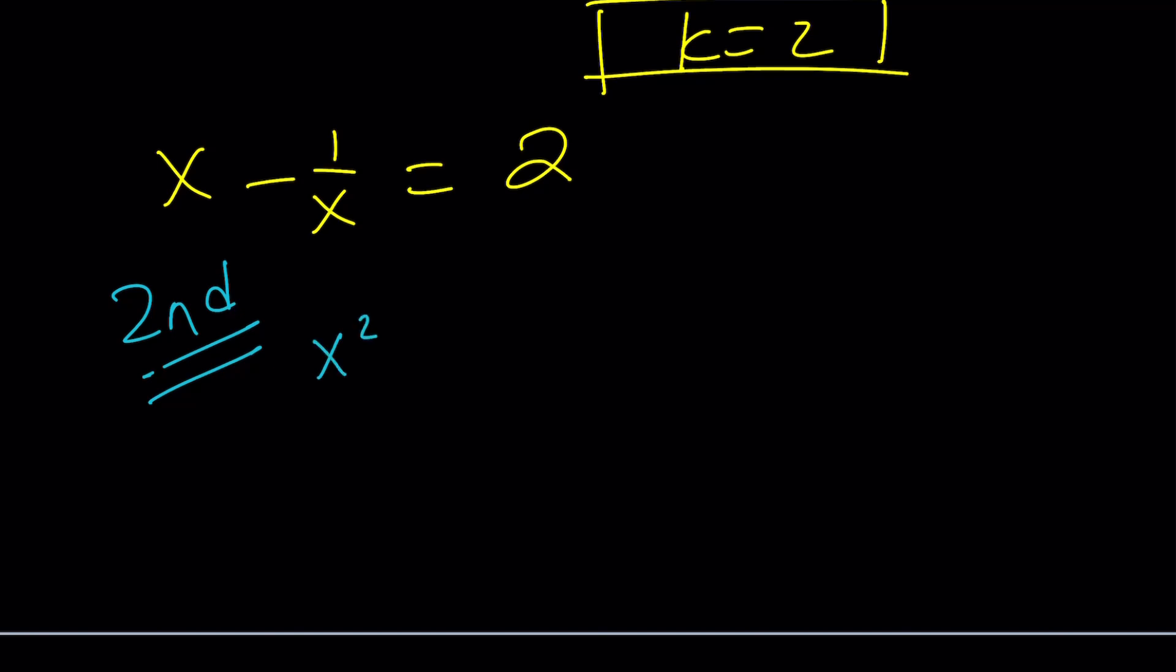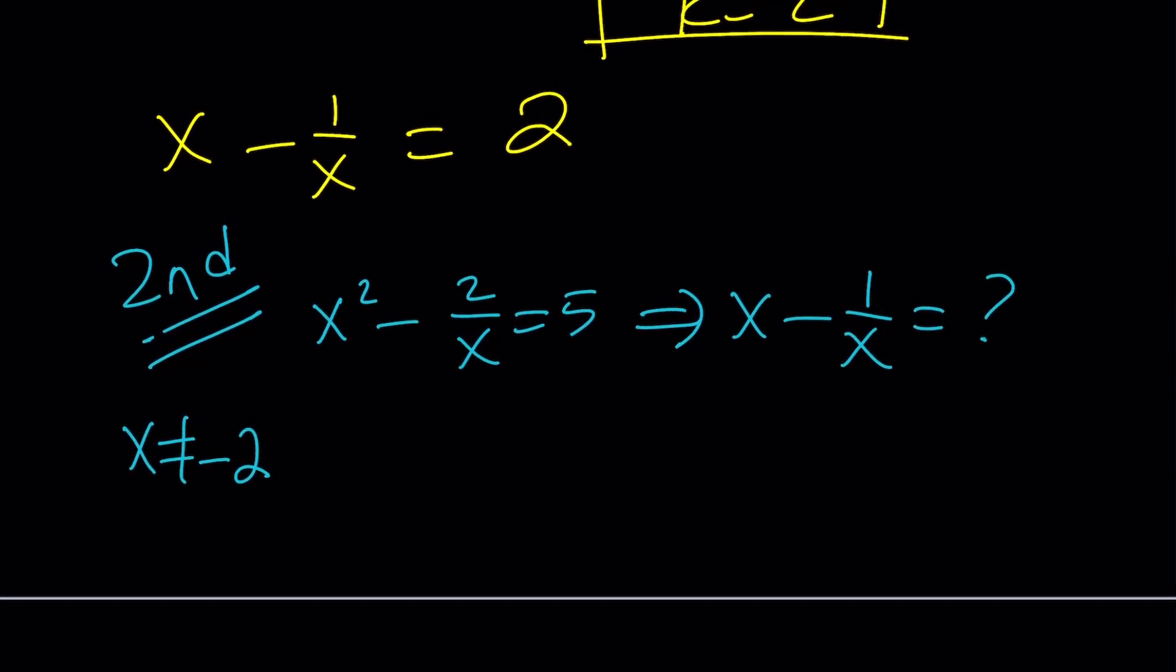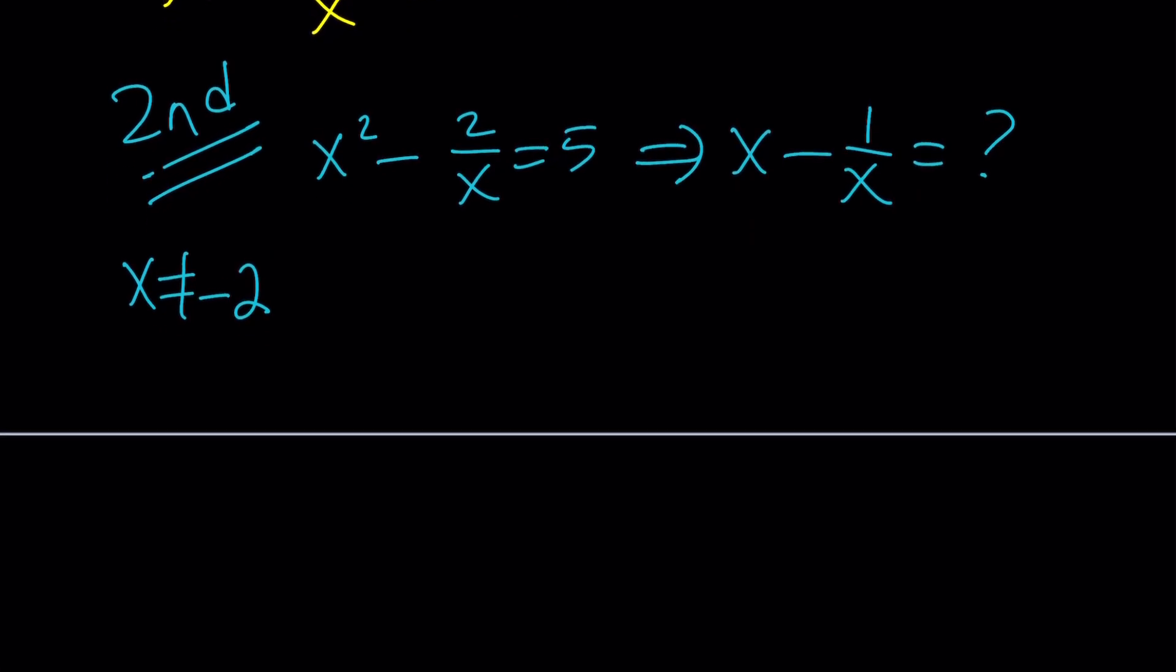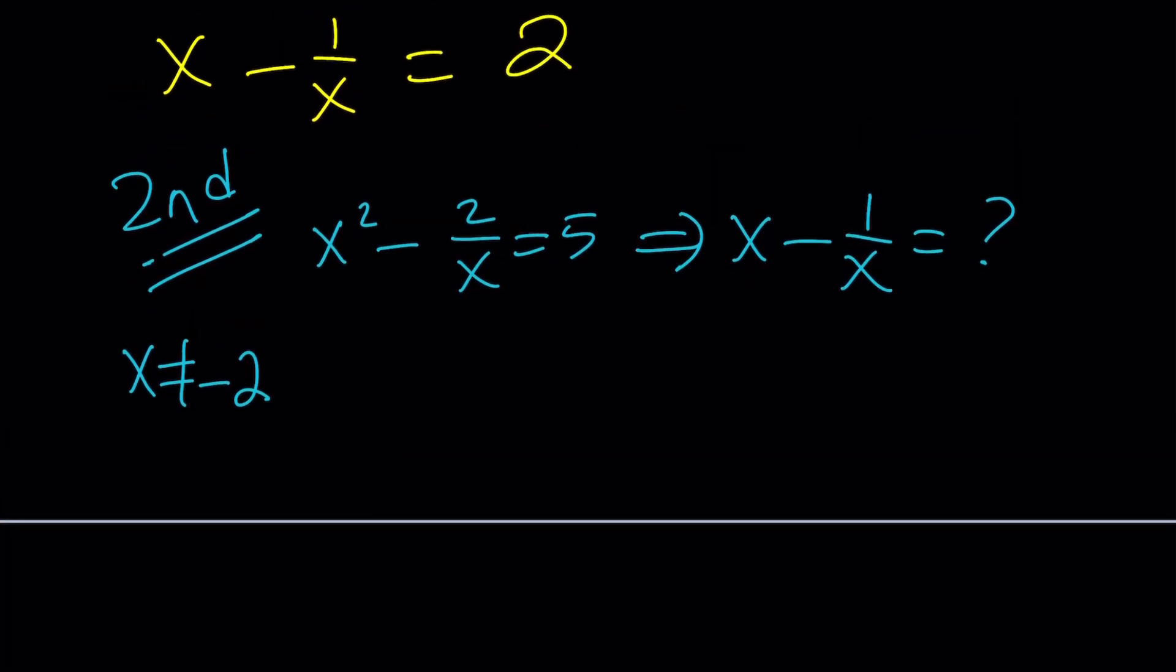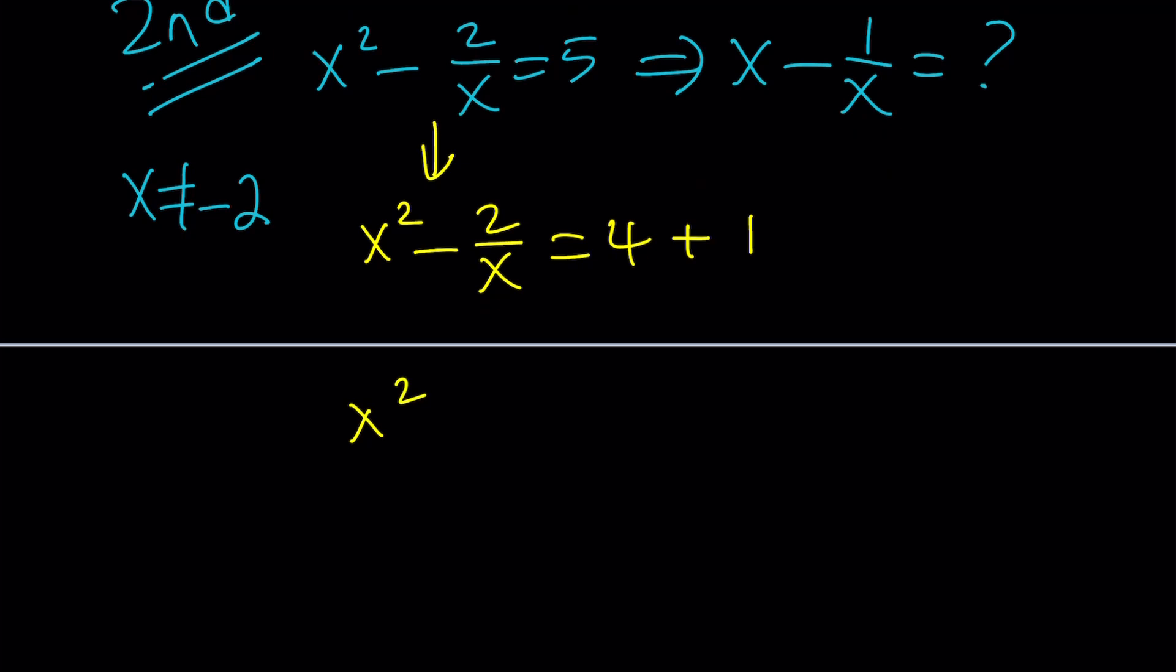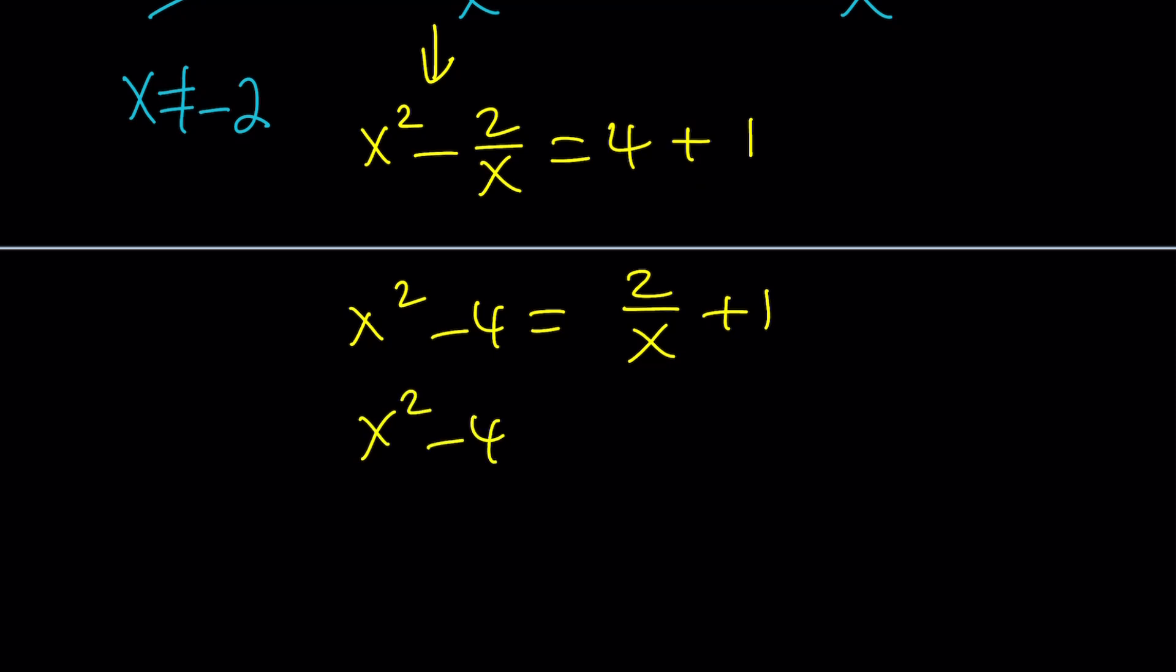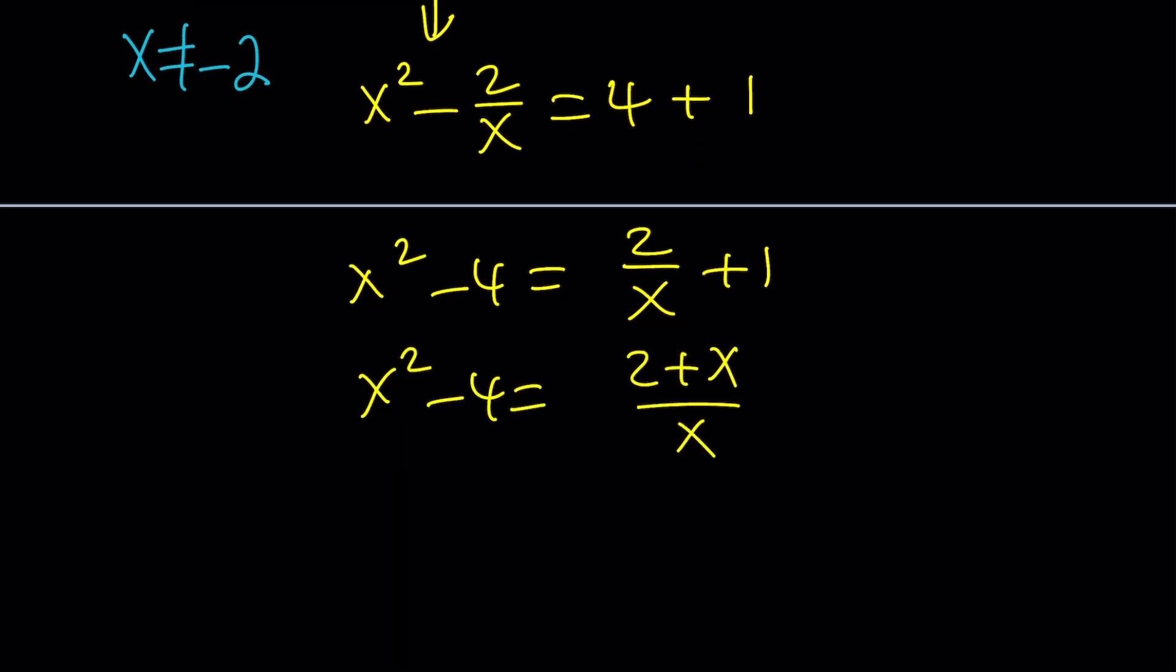Let me rewrite the problem. This is given, and we're supposed to evaluate x minus 1 over x, and we want x not to equal negative 2. Here's what we can do. This condition needs to be satisfied. I'm going to write the 5 as 4 plus 1. Then subtract 4 and add 2 over x. Make a common denominator and factor the left-hand side.